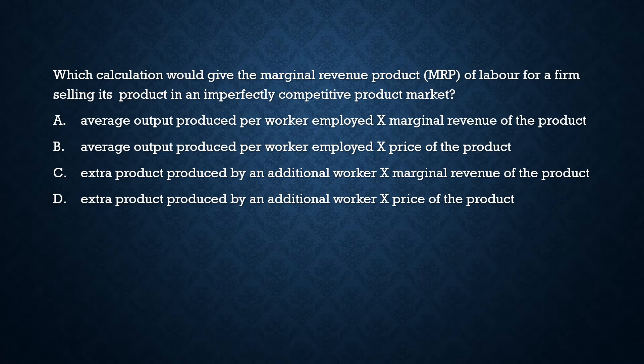Option C is the right answer: the extra product produced by an additional worker multiplied by the marginal revenue product. Option D is wrong — it uses price of the product instead of marginal revenue. The additional revenue you gain from the sale of output produced by an employee is the marginal revenue product, which equals marginal physical product multiplied by marginal revenue of the product.